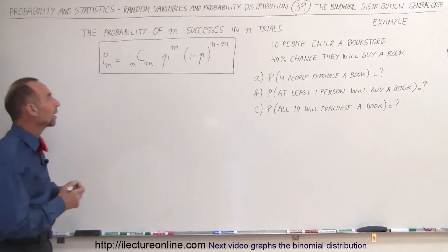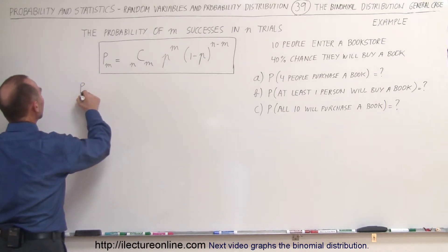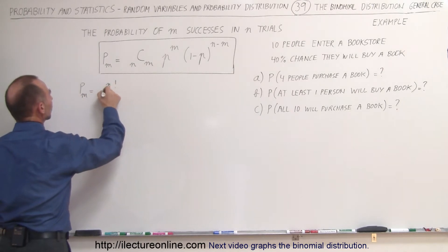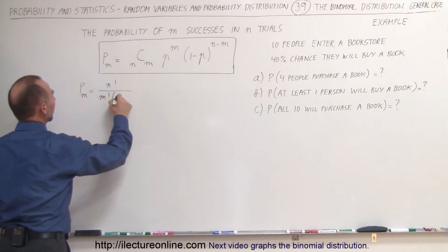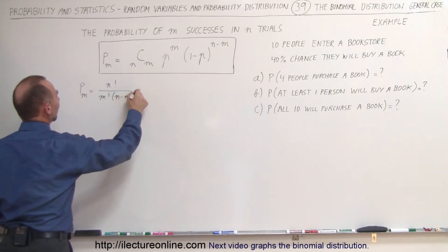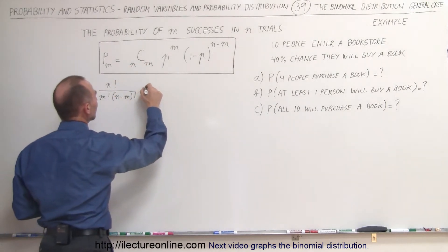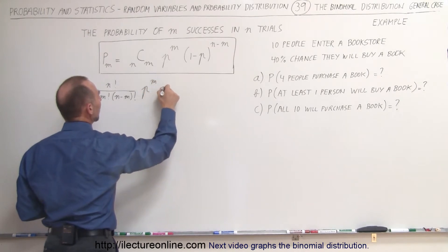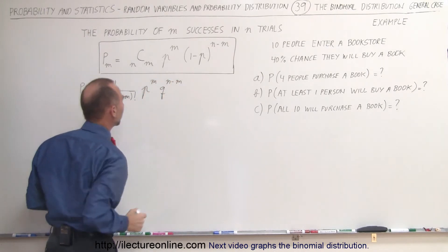Sometimes it's easier to write it like this: the probability of m successes is equal to n factorial divided by m factorial times (n minus m) factorial — that's what the combination symbol means — times the probability of success to the m power, times the probability of failure to the (n minus m) power.